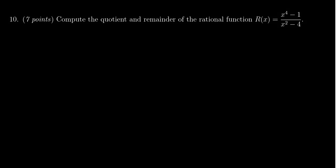In this video, we provide the solution to question 10 for practice exam 3 for Math 1050. We're given a rational function, x to the 4th minus 1 over x squared minus 4, and we're asked to compute the quotient and remainder. That is to say, we need to do long division of polynomials.